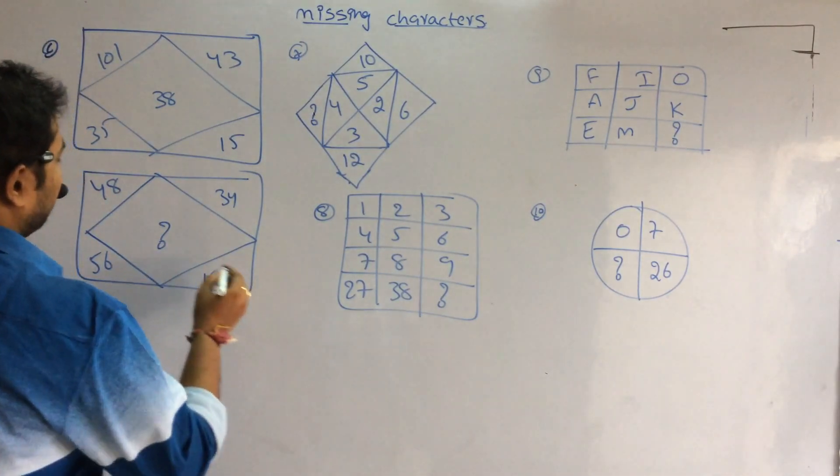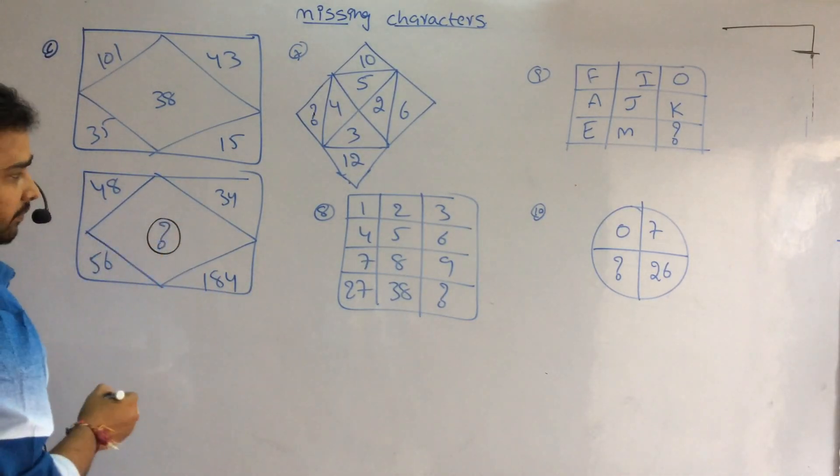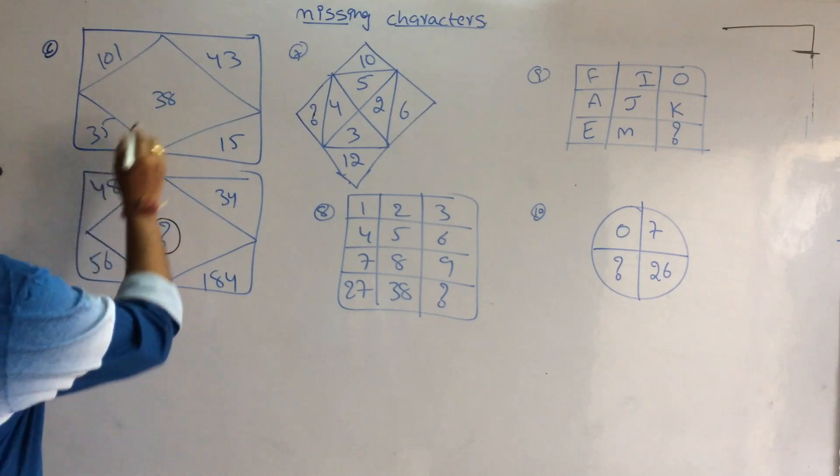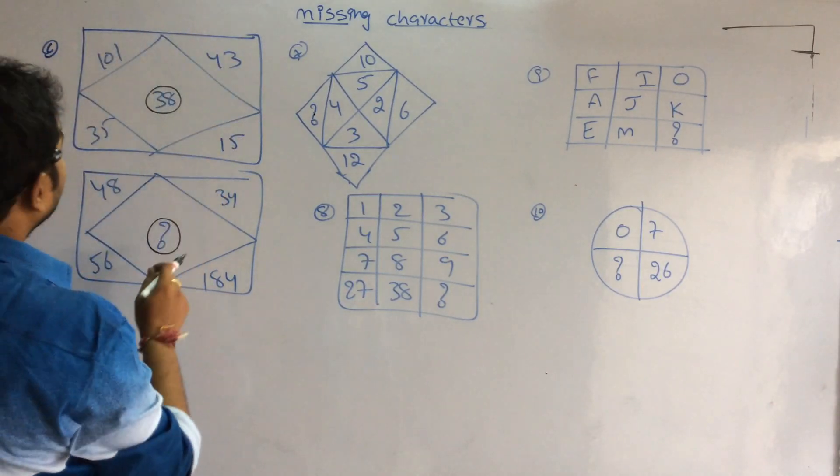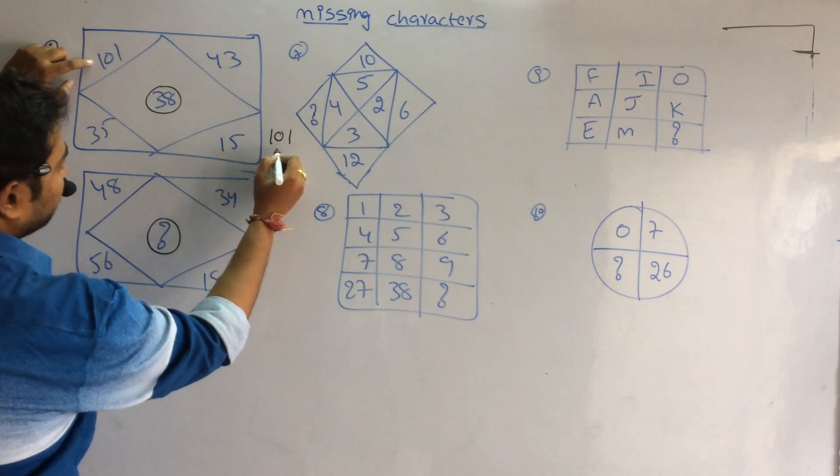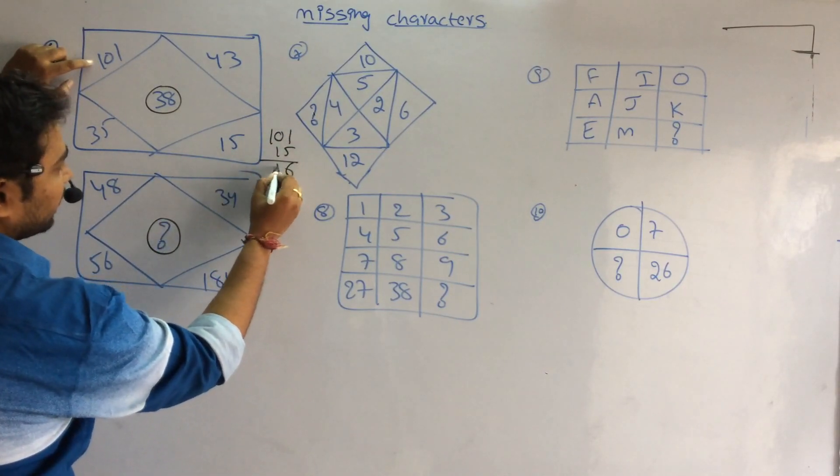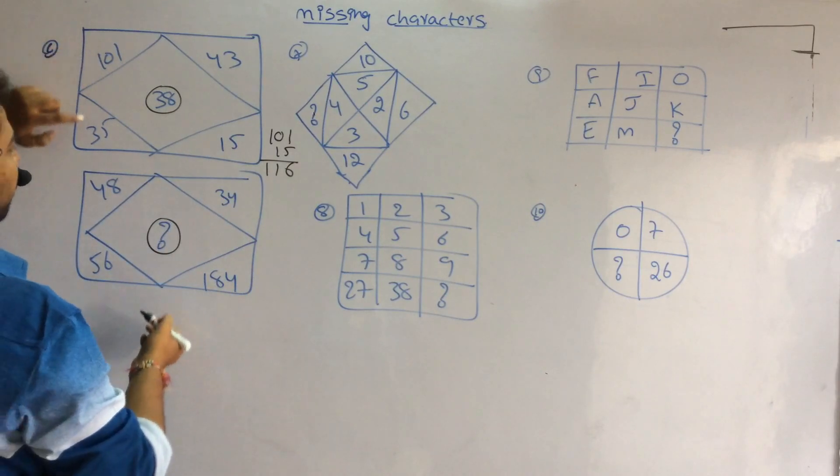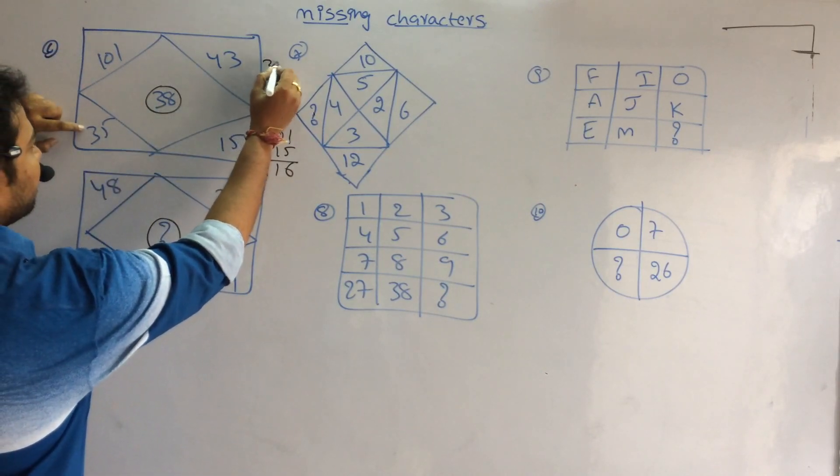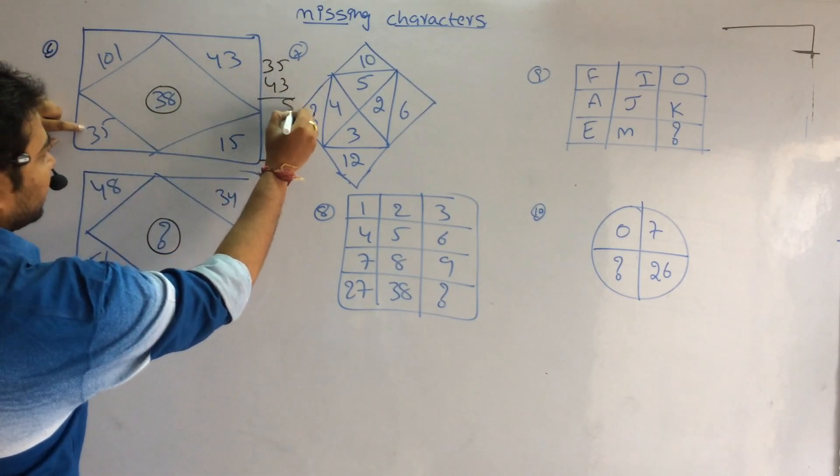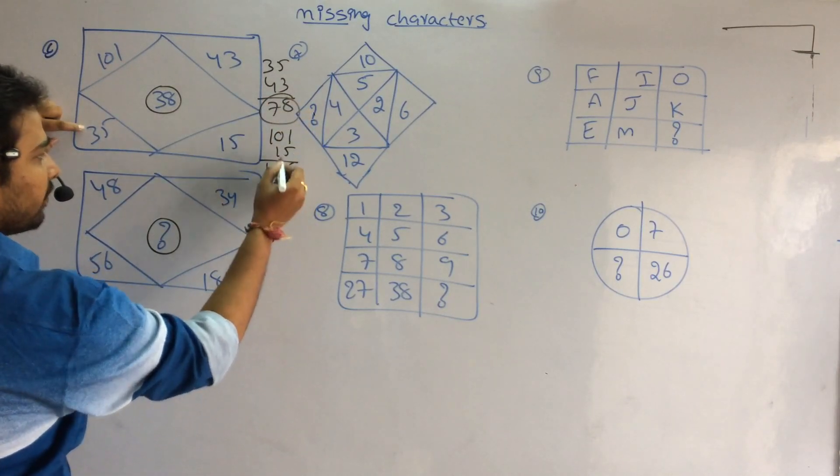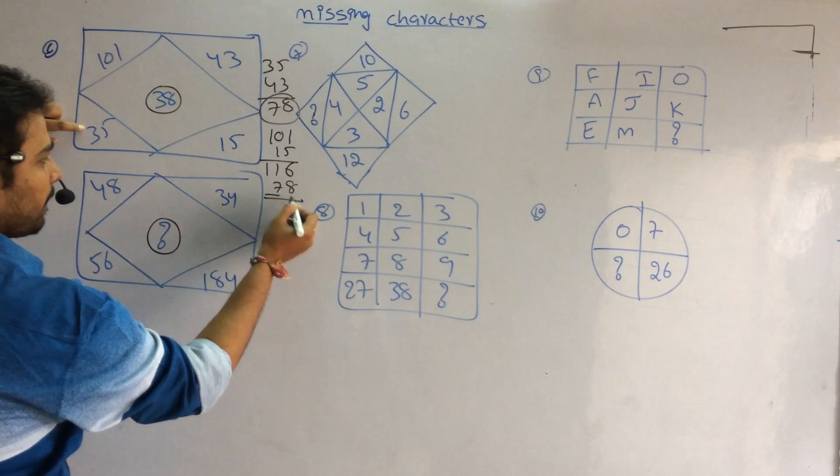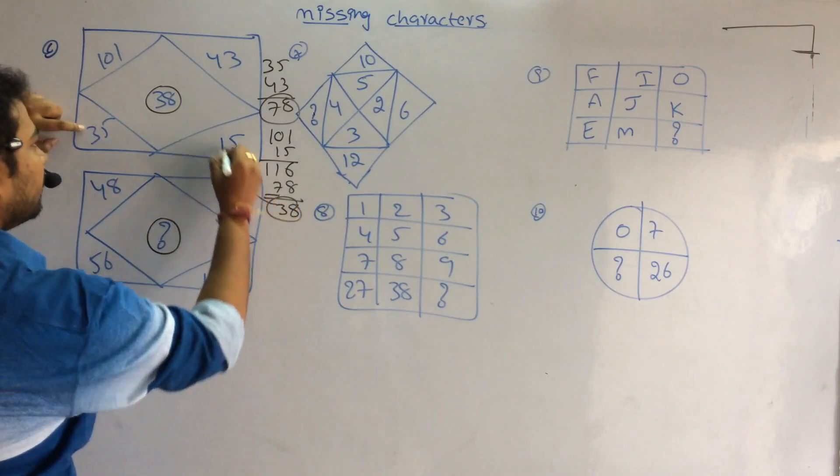Next problem. How did 38 come by using these numbers? Here, 101 plus 15 is 116. 35 plus 43 is 78. When we subtract 78 from 116, it is 38.